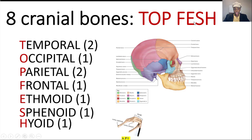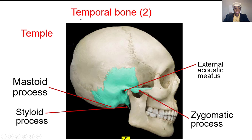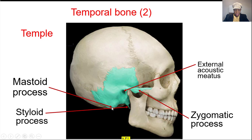The mnemonic is 'tap fish' — temporal, the temple. On the temporal bone, you see the external acoustic meatus, that's the hole here. The zygomatic process going towards the cheekbone. A big bump called the mastoid process, and a small process called the styloid process.